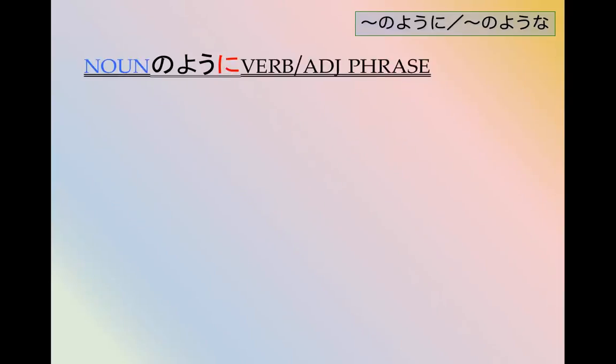Contrast this with 名のように that's followed by a verb or an adjective phrase. Aのように B means it's B just like A is B.